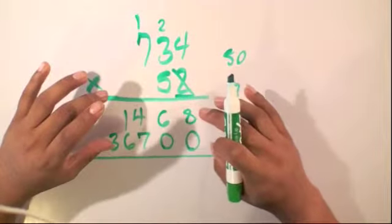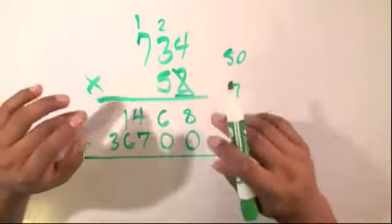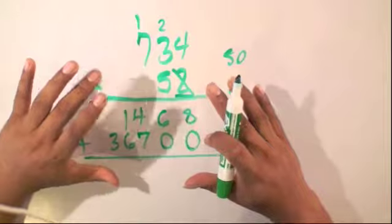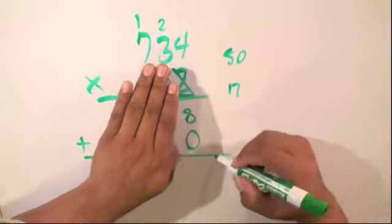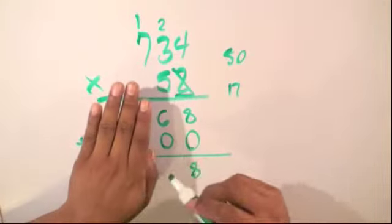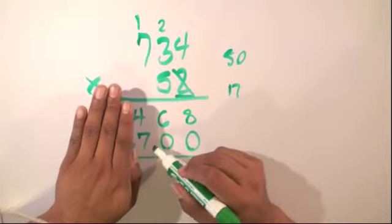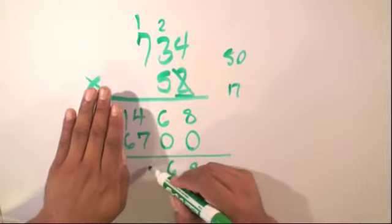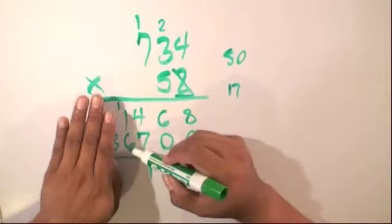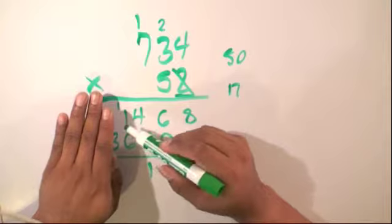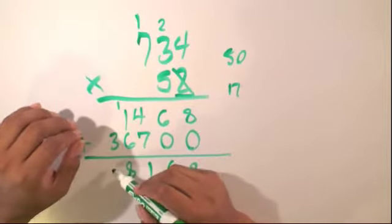Now, with these two numbers, we're going to add both of them together. So, we're done with multiplication. So, starting on the right, we have 8 plus 0, which is equal to 8. 6 plus 0 is equal to 6. 4 plus 7 is equal to 11. Carry the 1. 6 plus 1 plus 1 is equal to 8.